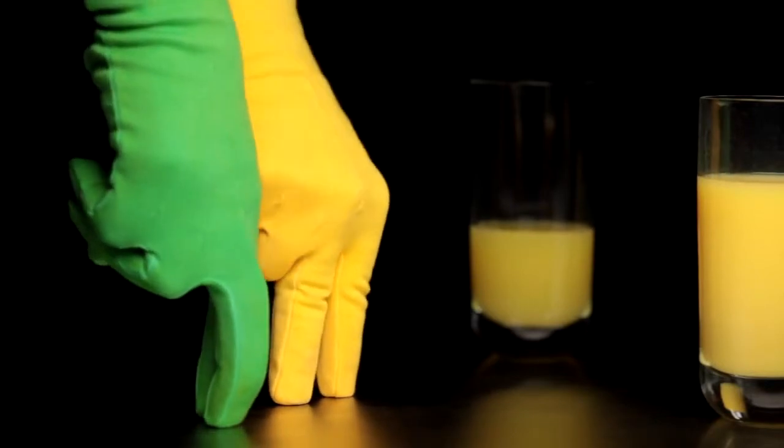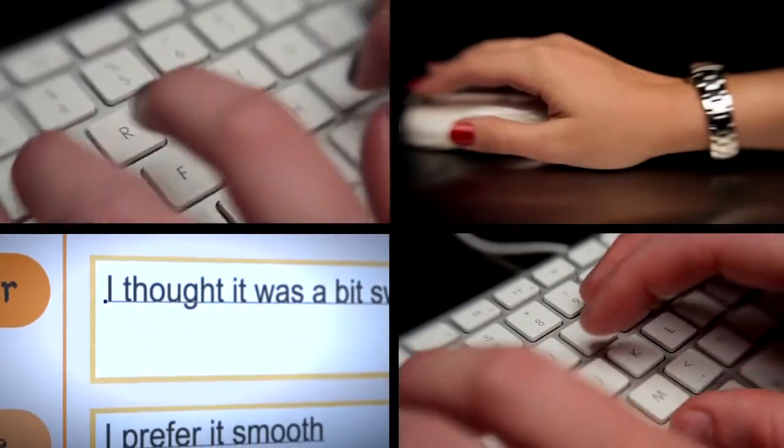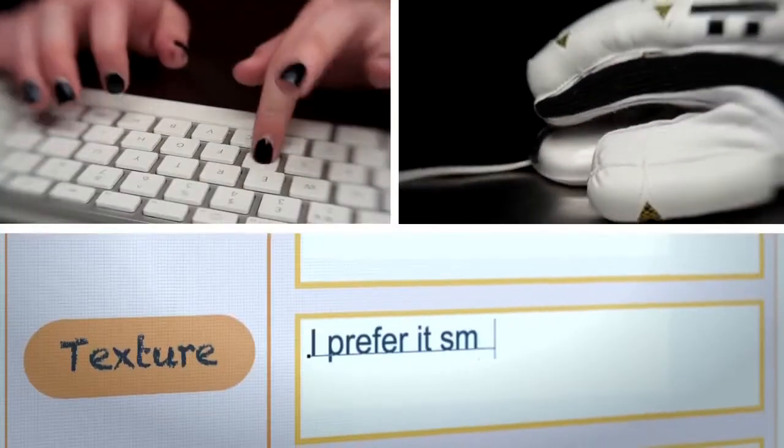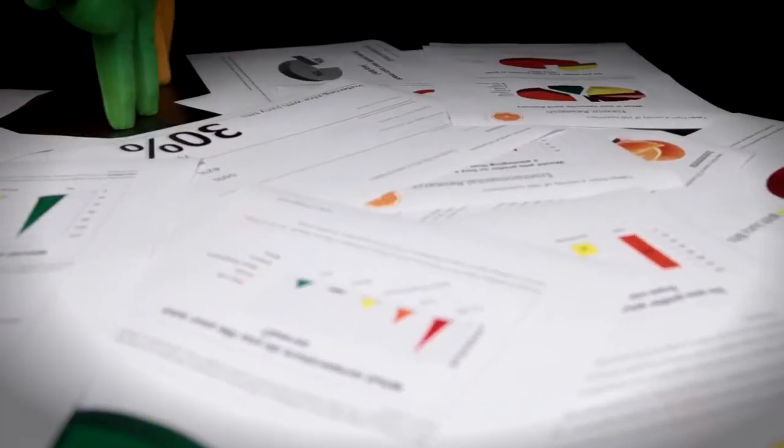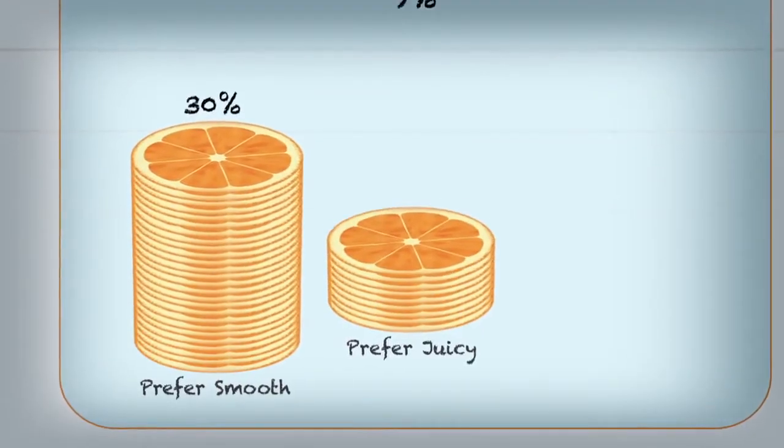Luckily, Mandy's got some tricks up her sleeve. Quality professionals design processes to gauge and respond to the customer's expectations. Andy's orange juice is served with juicy bits in. But Mandy discovers that 30% of his customers would actually prefer their OJ smooth.